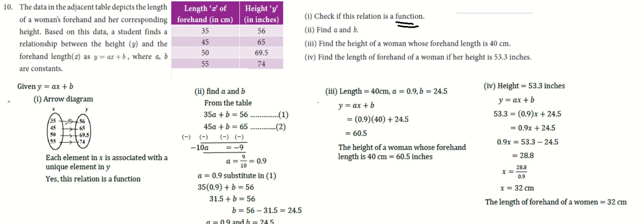Now, for one element in the domain, the codomain has one image. Each element in x is associated with a unique element in y. That's why this relation is a function.